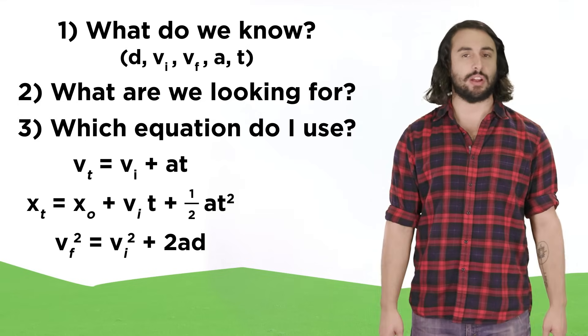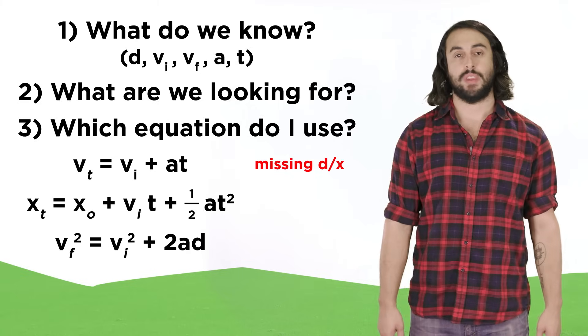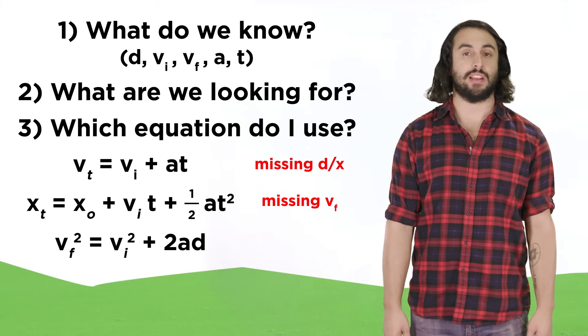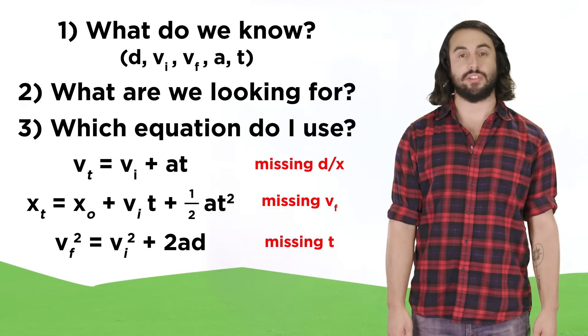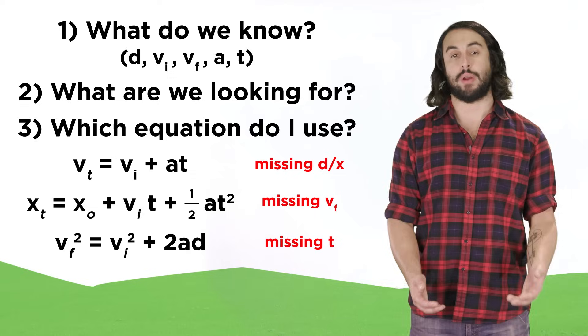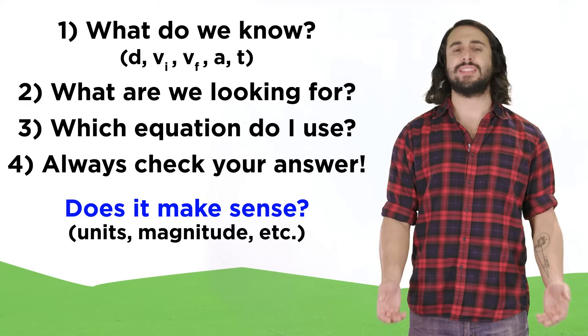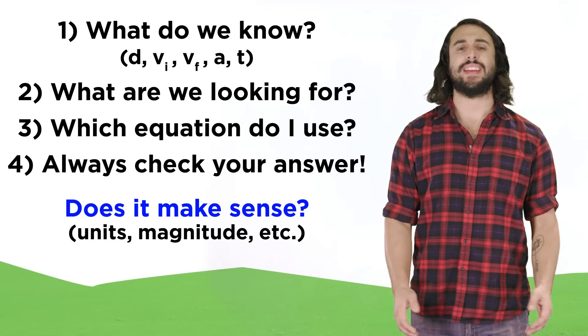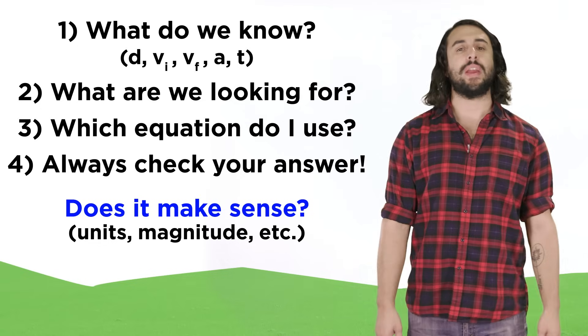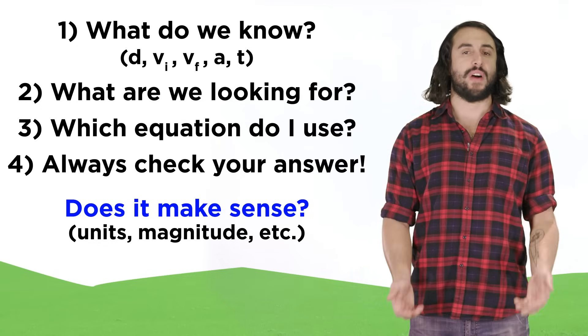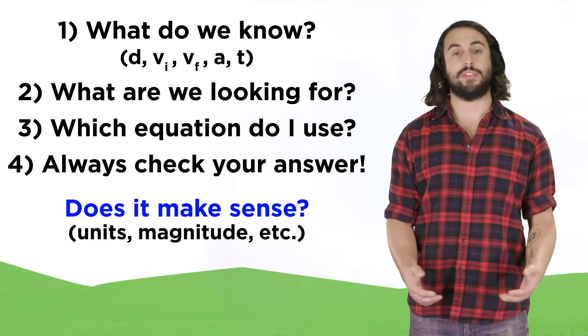Notice that each of these three equations is missing one of the common variables. This one is missing position, this one is missing final velocity, and this one is missing time. This allows us to do calculations even when there is an unknown parameter. And four, once you arrive at your answer, does it make sense logically, or is it way too big or too small to be reasonable? If we are able to think critically in this manner, we will find that many questions in kinematics become relatively trivial to answer.